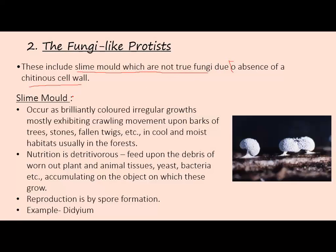Slime molds occur as brilliantly colored, irregular growths, mostly exhibiting crawling movement upon barks of trees, stones, fallen twigs, etc., in cool and moist habitats, usually in the forest. They are visible to the naked eye as multinucleate masses — colorful and irregular growths that exhibit crawling movement.